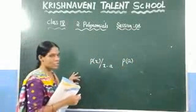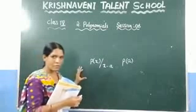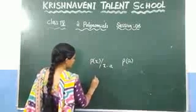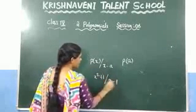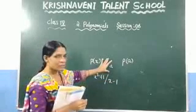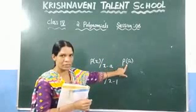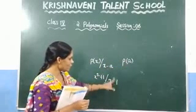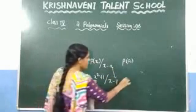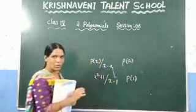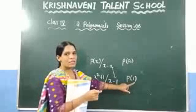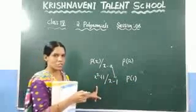That means without doing the actual division you can find the remainder of the given polynomial by using the remainder theorem. For example, consider x squared plus 1 divided by x minus 1. If you want to find the remainder, according to the remainder theorem the remainder is p of a. In this case, comparing the two, the value of a is 1. So the remainder is p of 1.